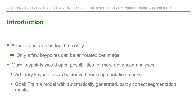So we need annotations, but annotations are costly. Therefore we are only able to annotate a few key points per image. But if we would have more key points, that would open possibilities for more advanced analysis for the athletes. From previous work we know that we can derive arbitrary key points from segmentation masks, and hence our goal is to train a model with automatically generated, partly correct segmentation masks.